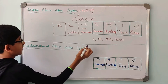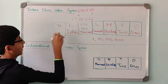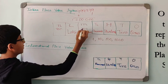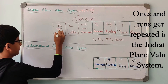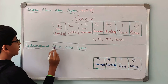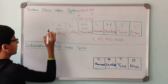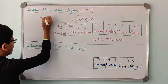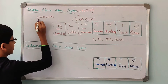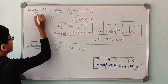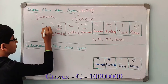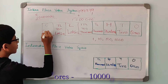So the places are: 1s, 10s, 100s, 1,000s, 10,000, Lac, 10 Lac. You can see that 1s and 10s are getting repeated here. After this, the next place is 1 followed by 7 zeros, and this place is called the Crores place.